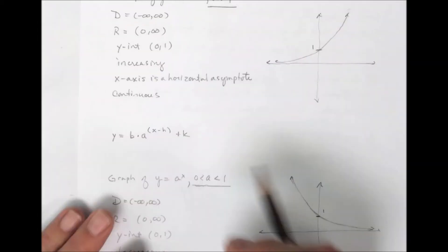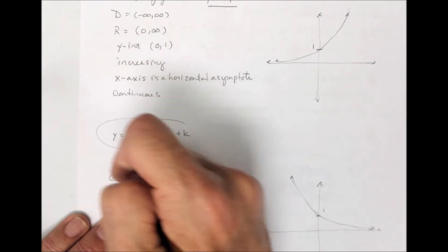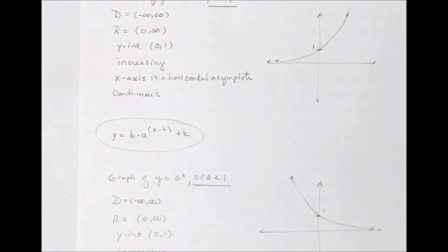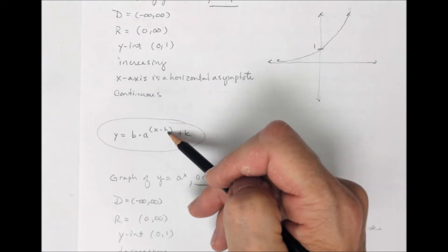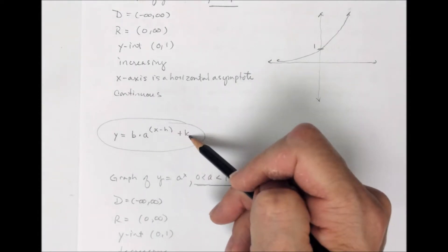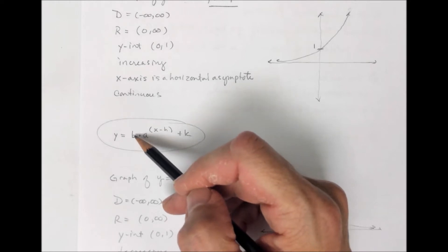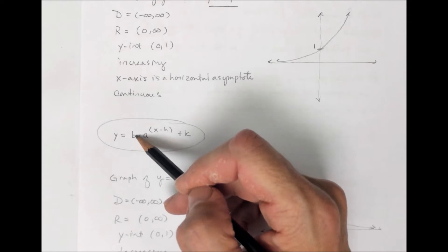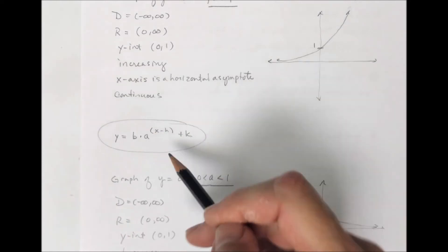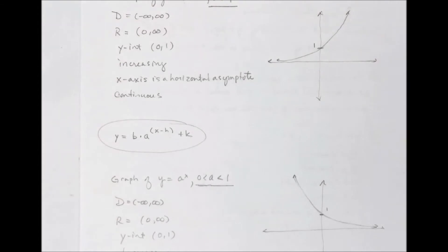That shows what we sometimes call exponential decay, as the first case is exponential growth. There are different kinds of transformations they might ask for: a shift right or left, a shift upward or downward. If B is negative, you get a reflection in the x-axis. If B is greater than 1, it's a vertical stretch; between 0 and 1, it's a vertical shrink. I'm going to start by graphing the most basic exponential function.